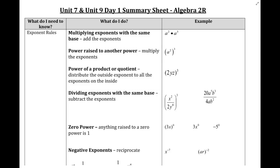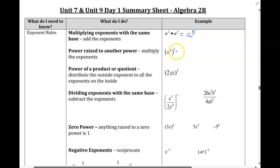When we multiply with like bases, we add those exponents together. That would give us a to the 5th. It's when we raise a power to a power that we multiply the exponents together, in this case to get a to the 6th.